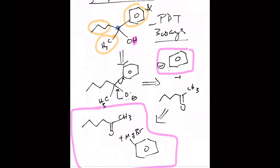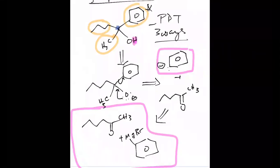For the quiz, for the question where we have to write it out — if it's a secondary one, do we have to show both intermediates and both ways we can get the starting materials, or just one? Just one, unless the question asks you to show more than one way — just show one way.